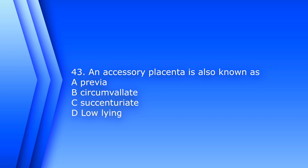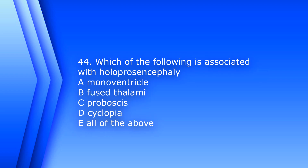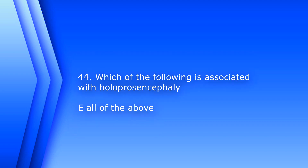Question 44: Which of the following is associated with holoprosencephaly? A) monoventricle, B) fused thalami, C) proboscis, D) cyclopia, or E) all of the above. The answer is E, all of the above. All of these findings can be associated with holoprosencephaly.